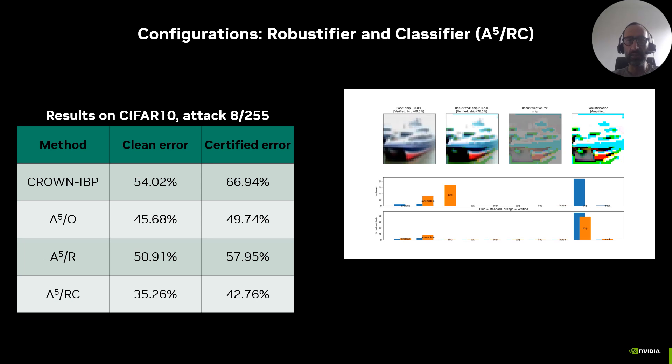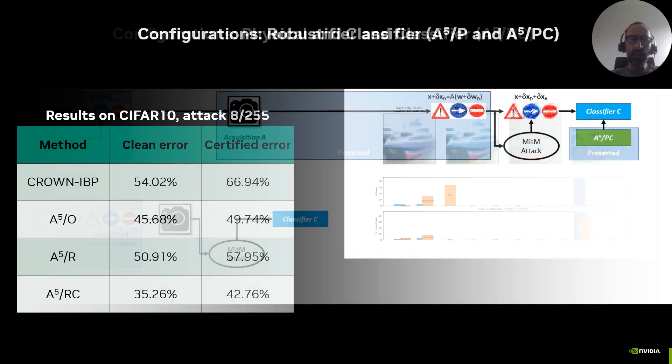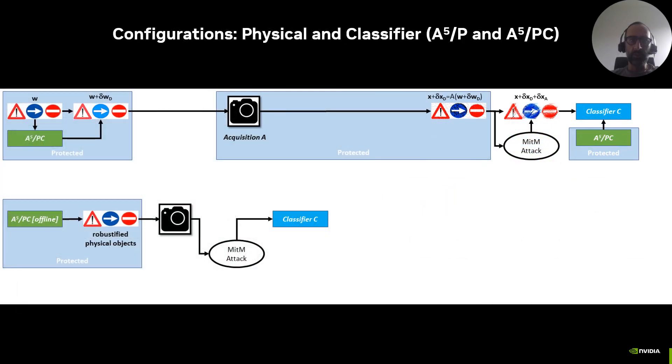A5 can be used to create certifiably robust physical objects. In this case, we only have to include the camera model in the training pipeline, while the cost function and training procedure are basically unchanged. This procedure could be used to create robust road signs that cannot be attacked, or as shown in the next slide, robust fonts for optical character recognition.